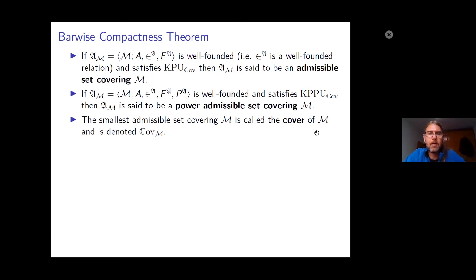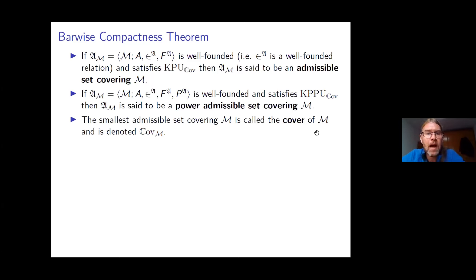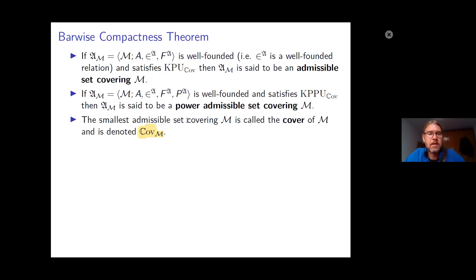A well-founded L*P-structure satisfying KPPU-cover is called a power admissible set covering M. Barwise defines the cover of an L-structure M as the smallest admissible set covering M. If it exists, this smallest admissible set covering M is denoted Cov(M).